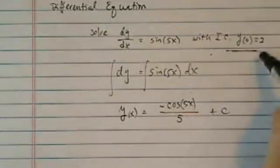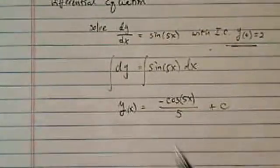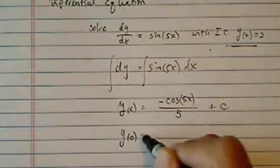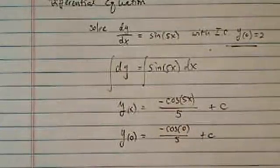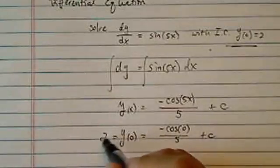And with the initial condition, we'll be able to find out what the constant is. At x equal to 0, we have minus cosine of 0 divided by 5 plus constant. And this one is equal to 2.